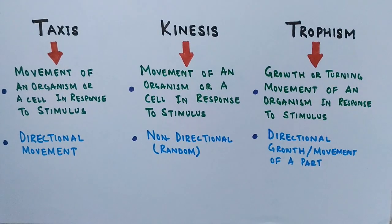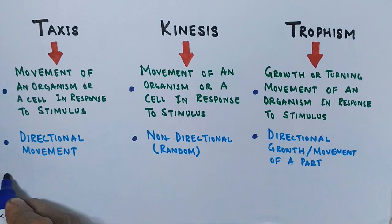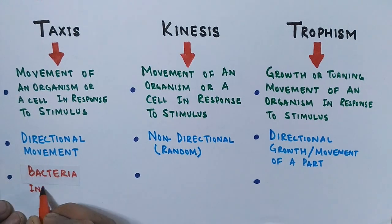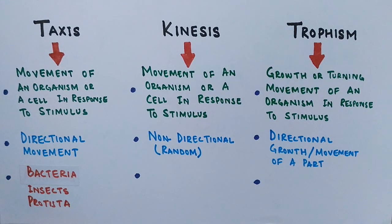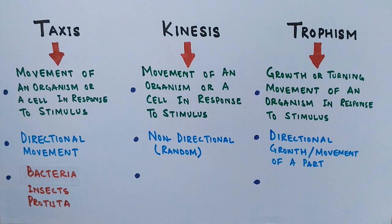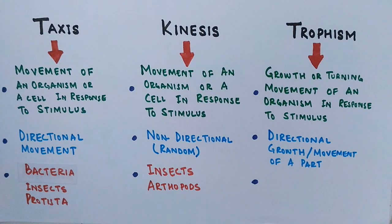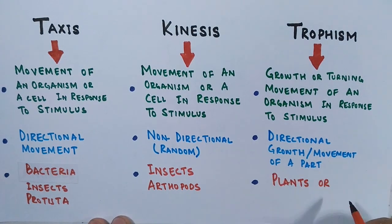Another property differentiates these three phenomena. Taxis occurs in bacteria, insects, protozoa, and other animals. Kinesis is mostly found in insects and arthropods, like cockroaches. Tropism is exclusively for plants or plant parts.